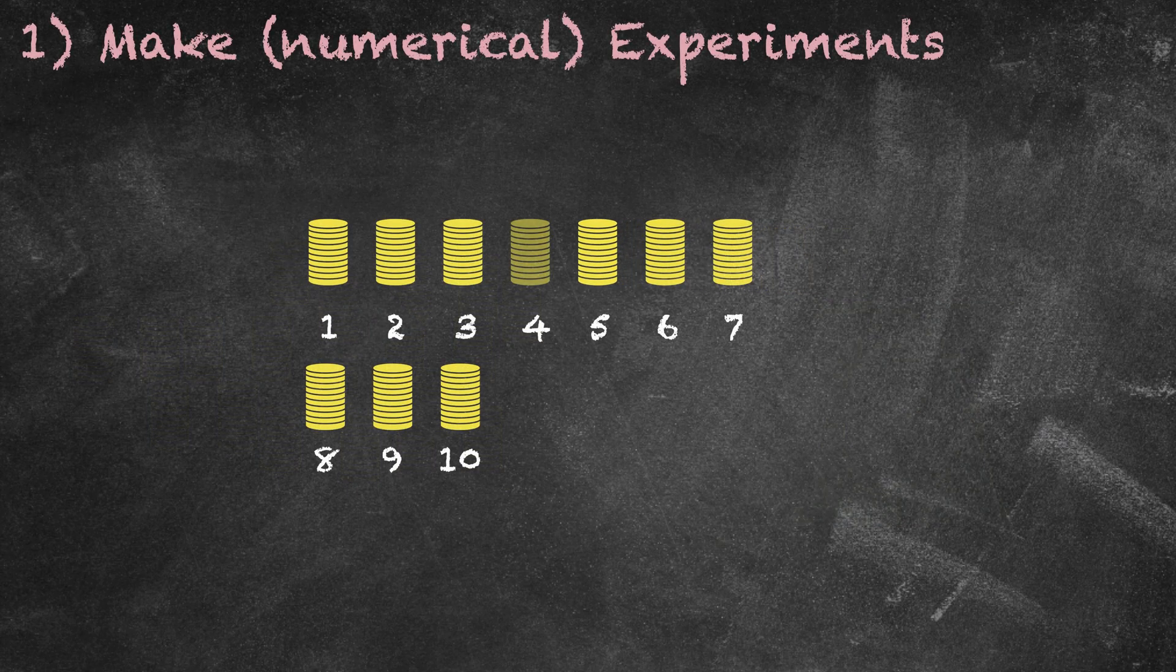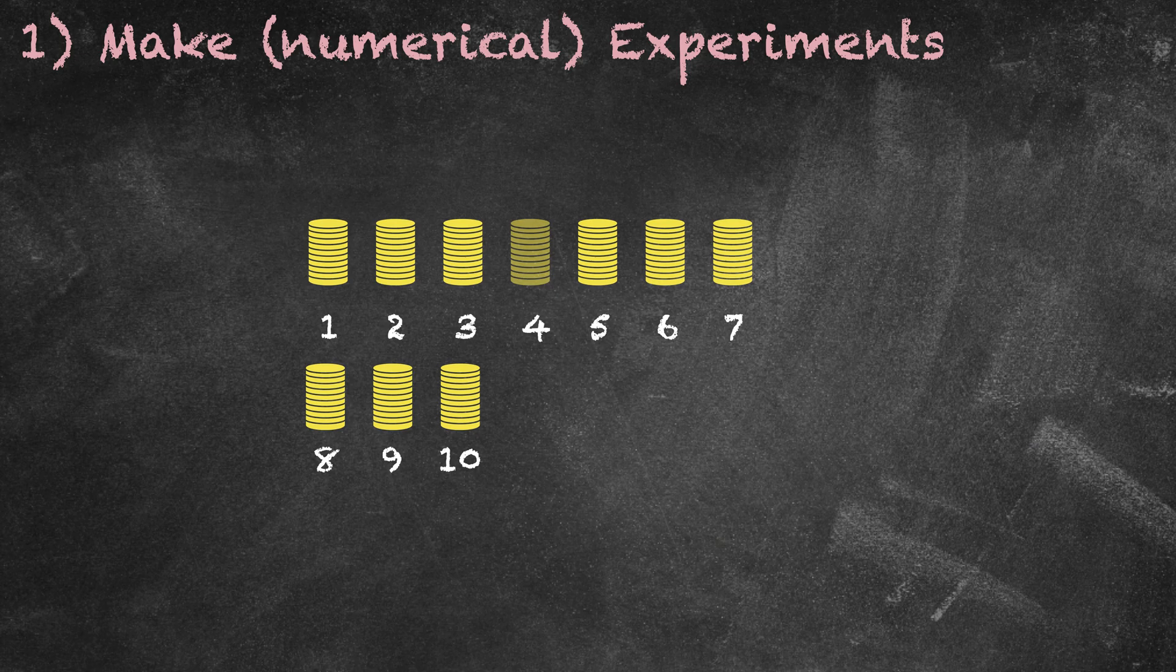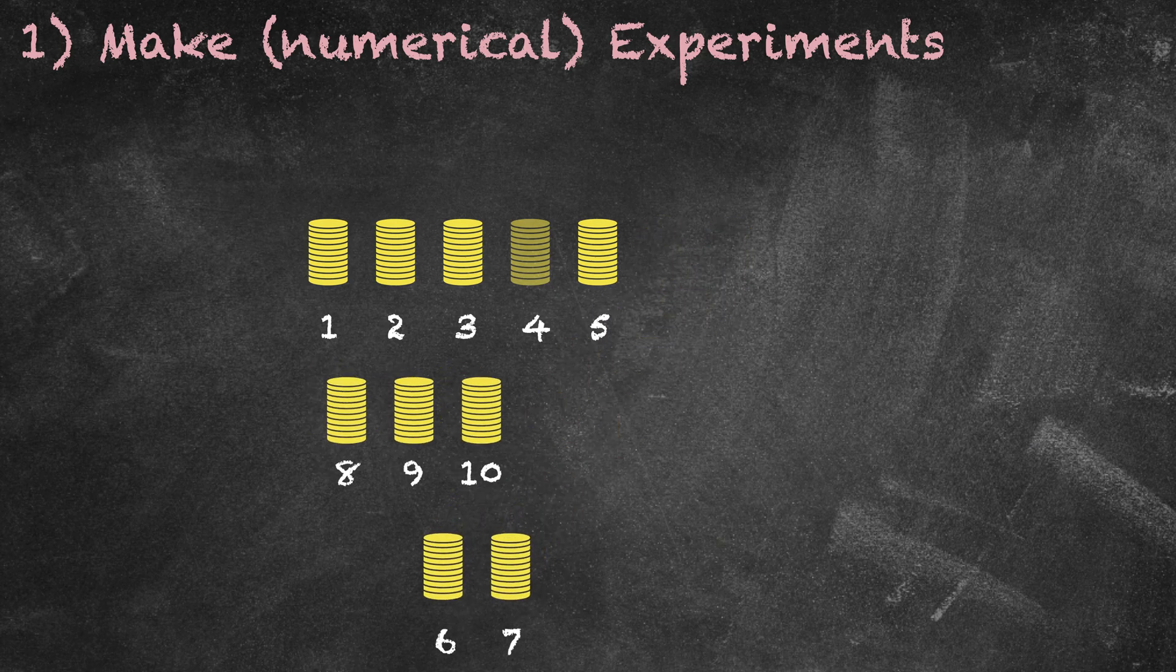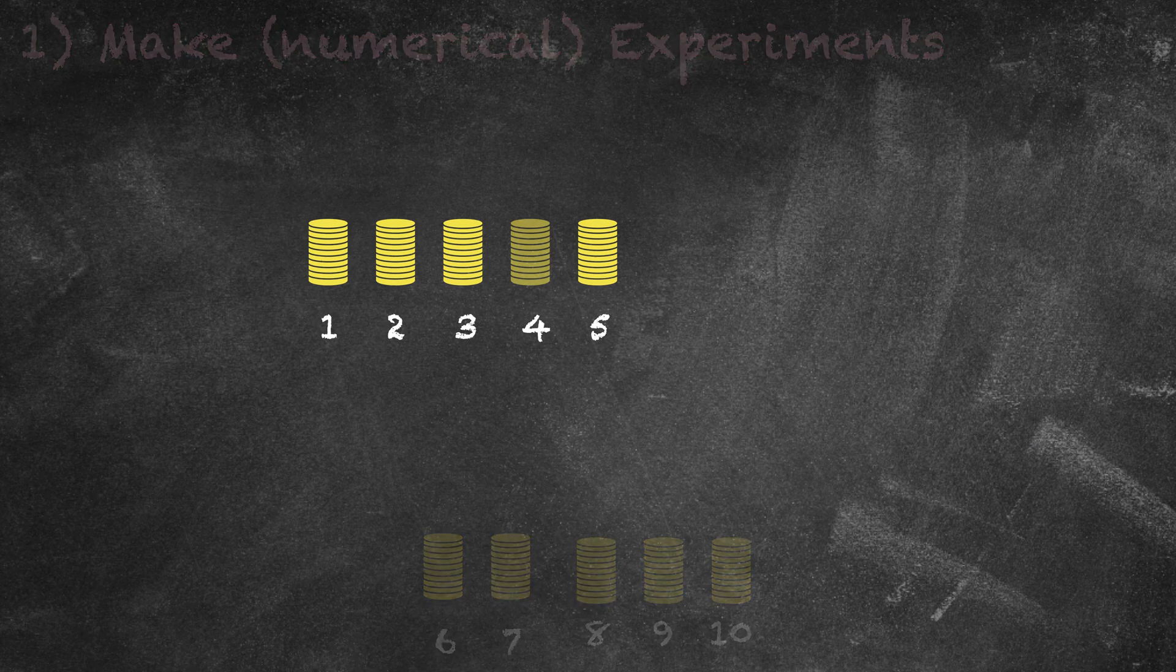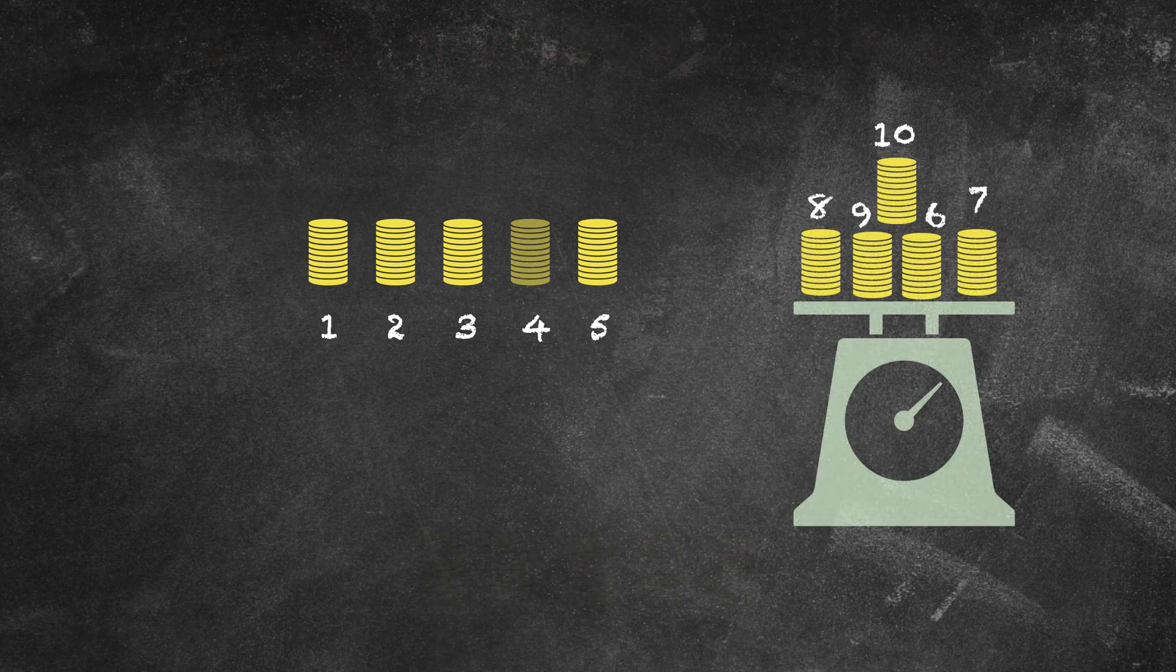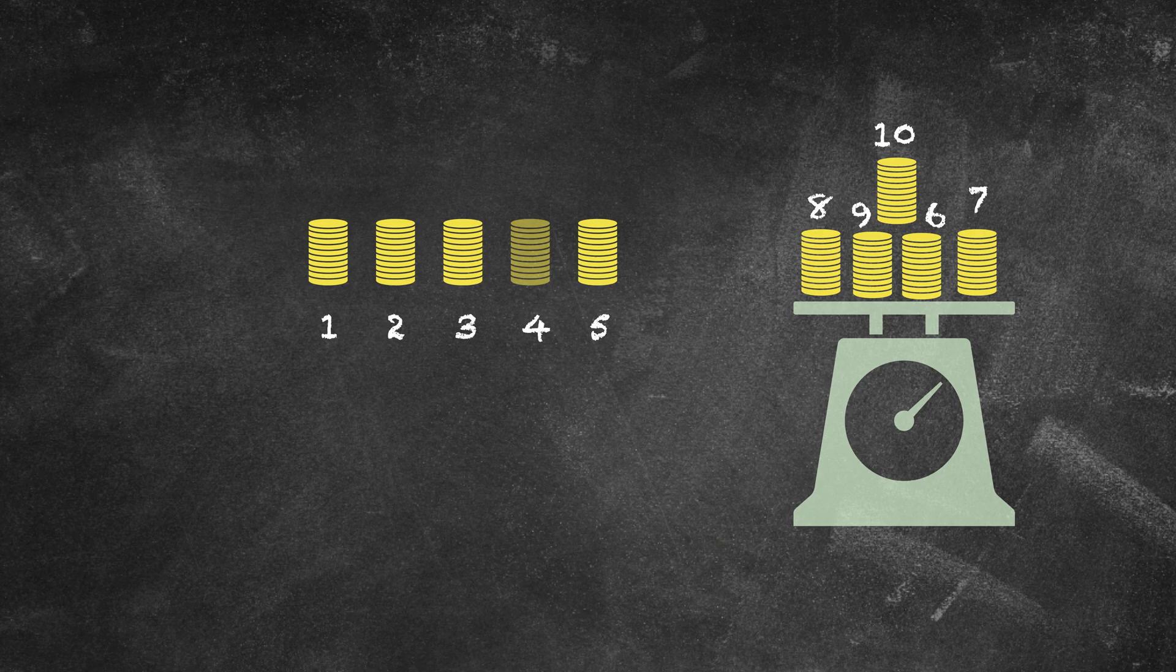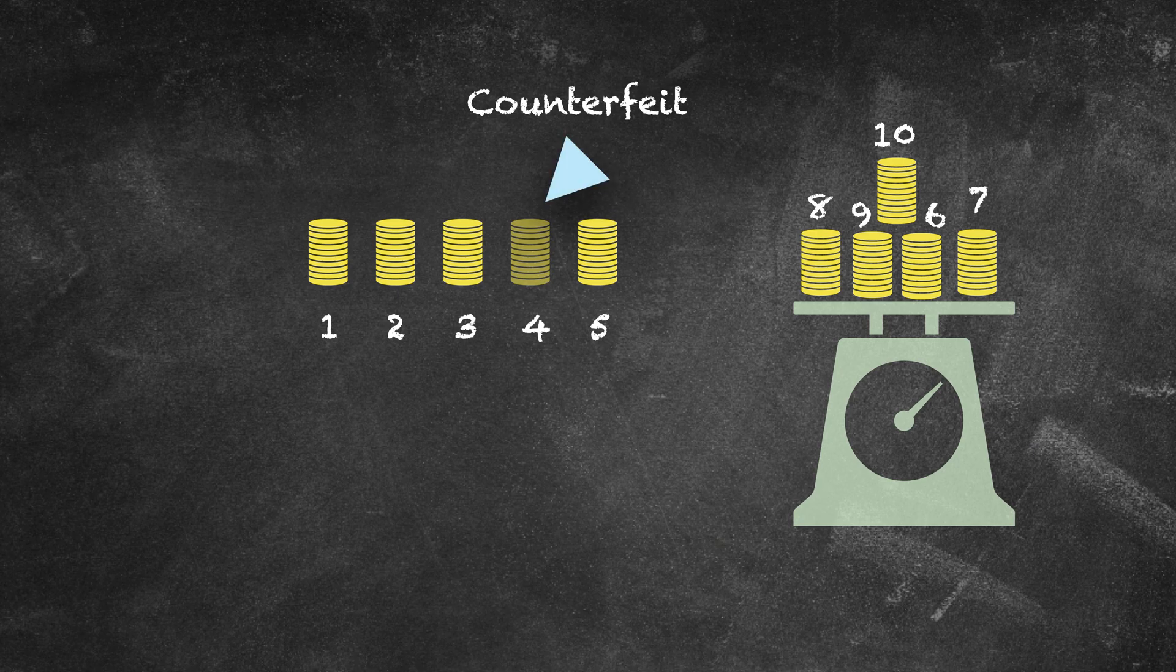So let's apply the first tactic, let's make some experiments. Suppose we have to deal with 10 stacks only, we halve the group and weigh these 5 stacks. Our scale will reveal a weight that is consistent with a group of stacks which does not include the counterfeit one. So this is our first weighing.